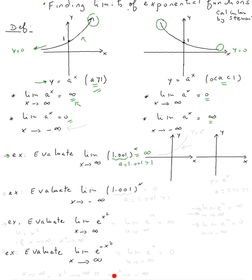Now for the second example: limit of 1.001 to the x as x goes to negative infinity. Here a is 1.001, still bigger than 1, so I'm going to use the same case. The answer will be 0.